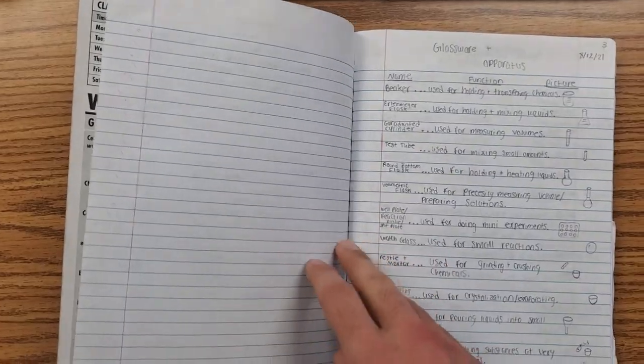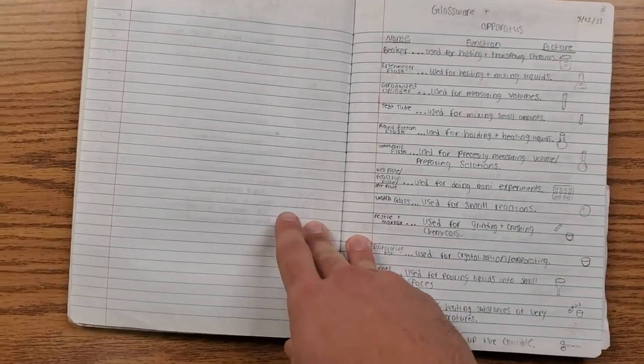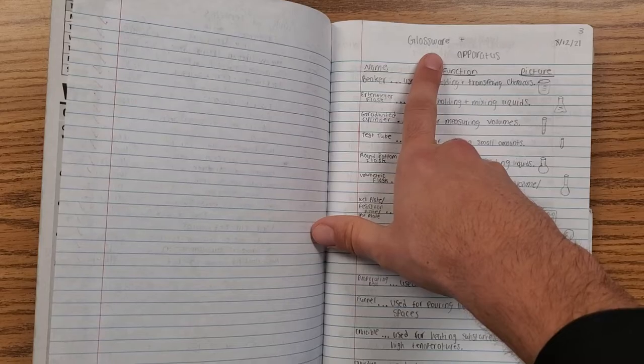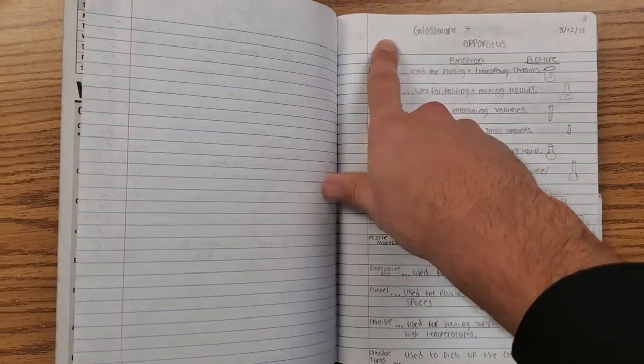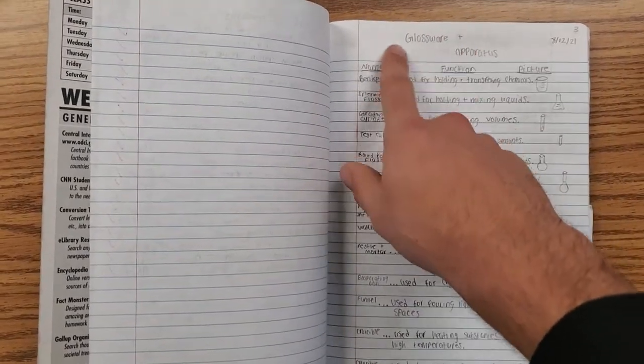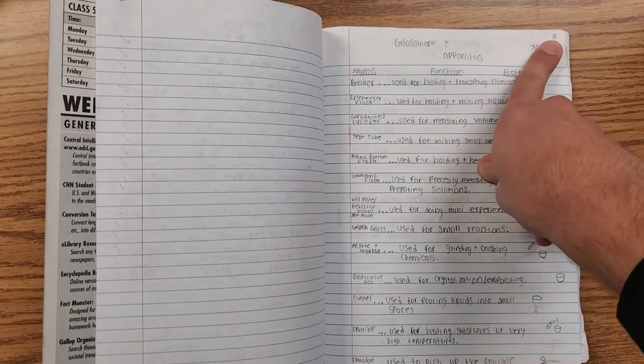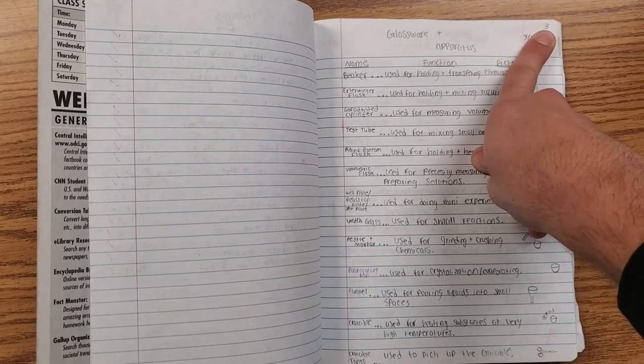You can go ahead and write the title for our first little thing that's going in our notebook. That is going to be 'Glassware and Apparatus.' That can go in the big space here. That's where your title will go. Your page number should already be in the top right or top outside corner.